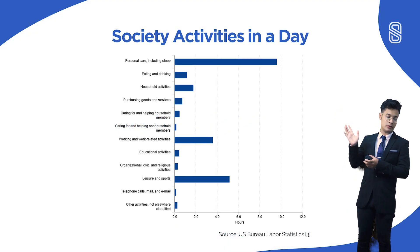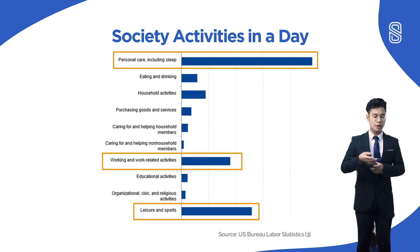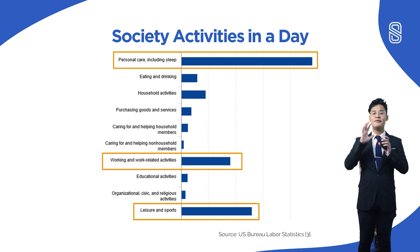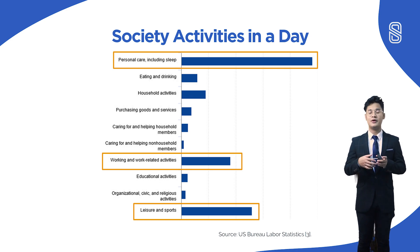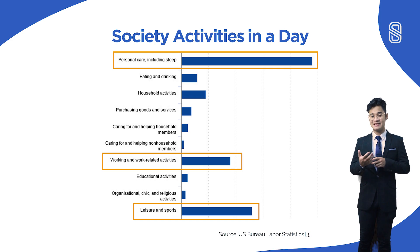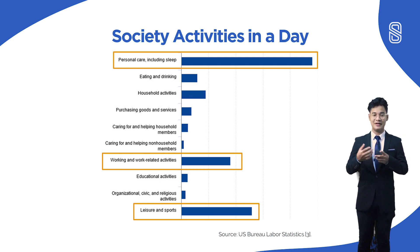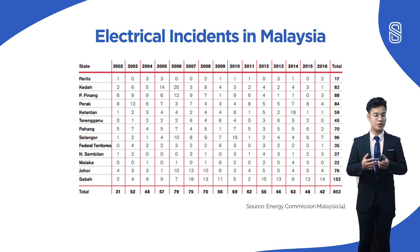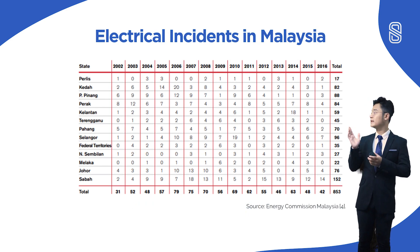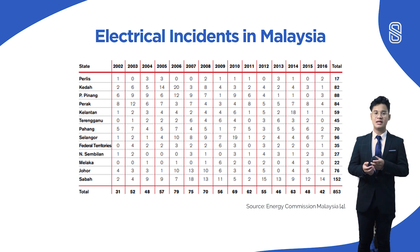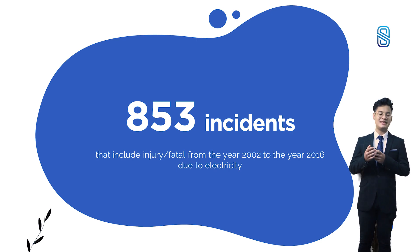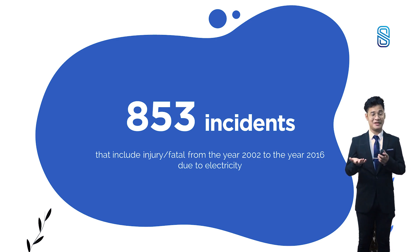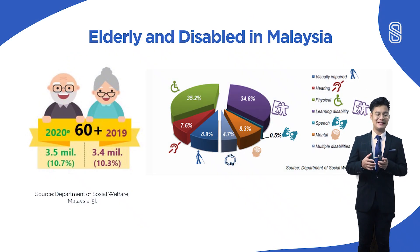All of these activities are done when people are not at home or are unconscious. That's why I wanted to create a device that can remotely access the switches or devices at home whenever they are anywhere in the world, and that can automatically perform tasks even while they are asleep. Next is electrical incidents in Malaysia. This table is obtained from the Energy Commission Malaysia — 853 incidents happened from 2002 to 2016 due to electricity. That's a very large number.